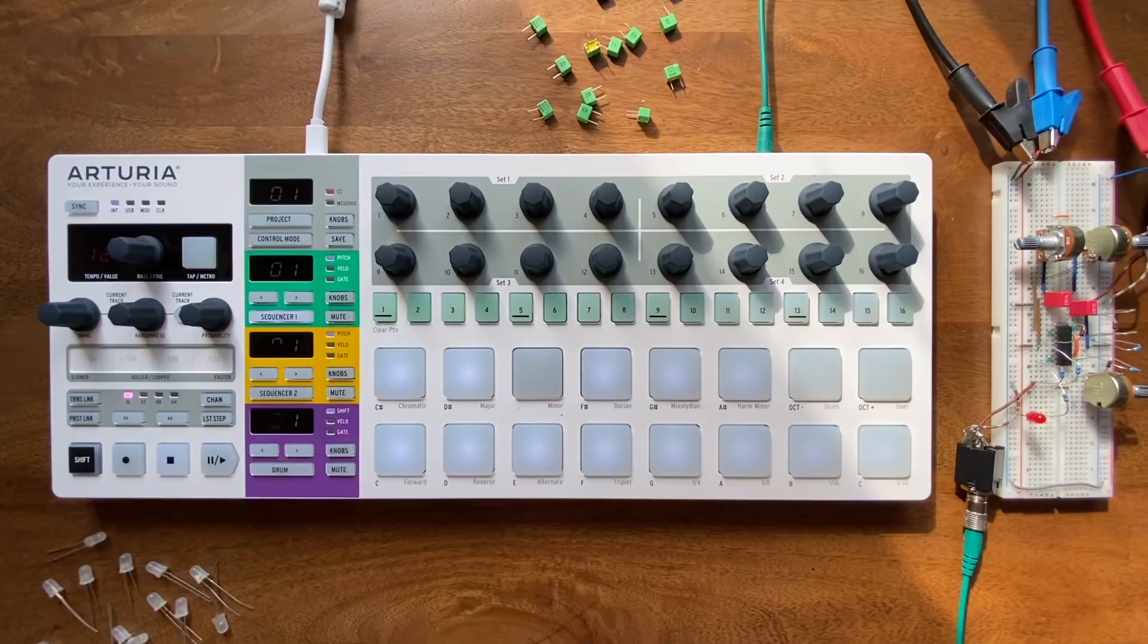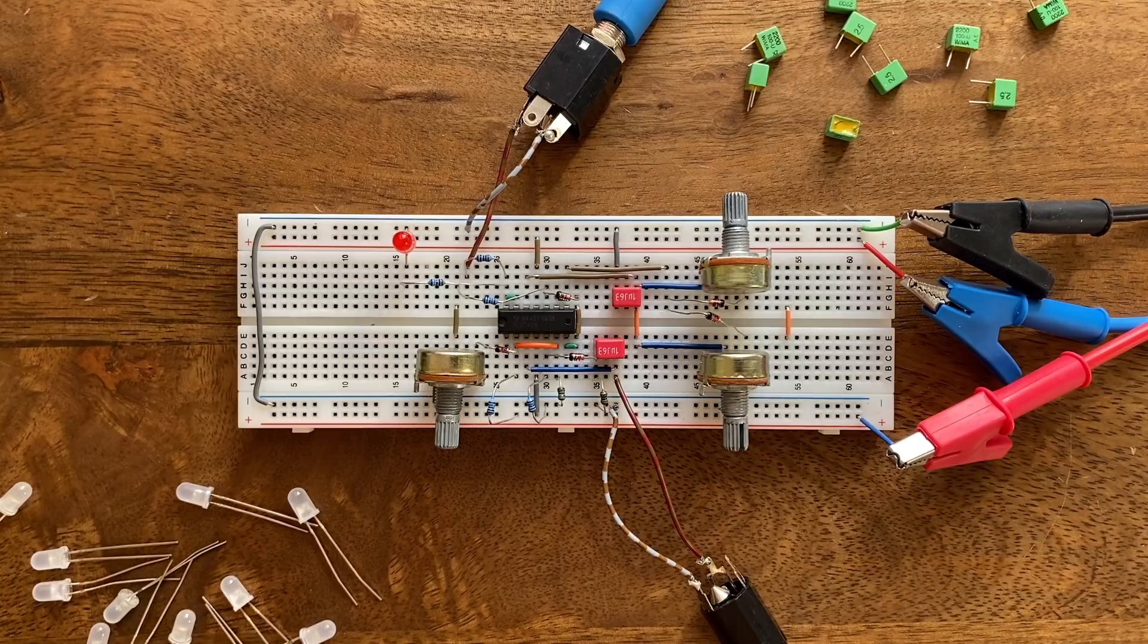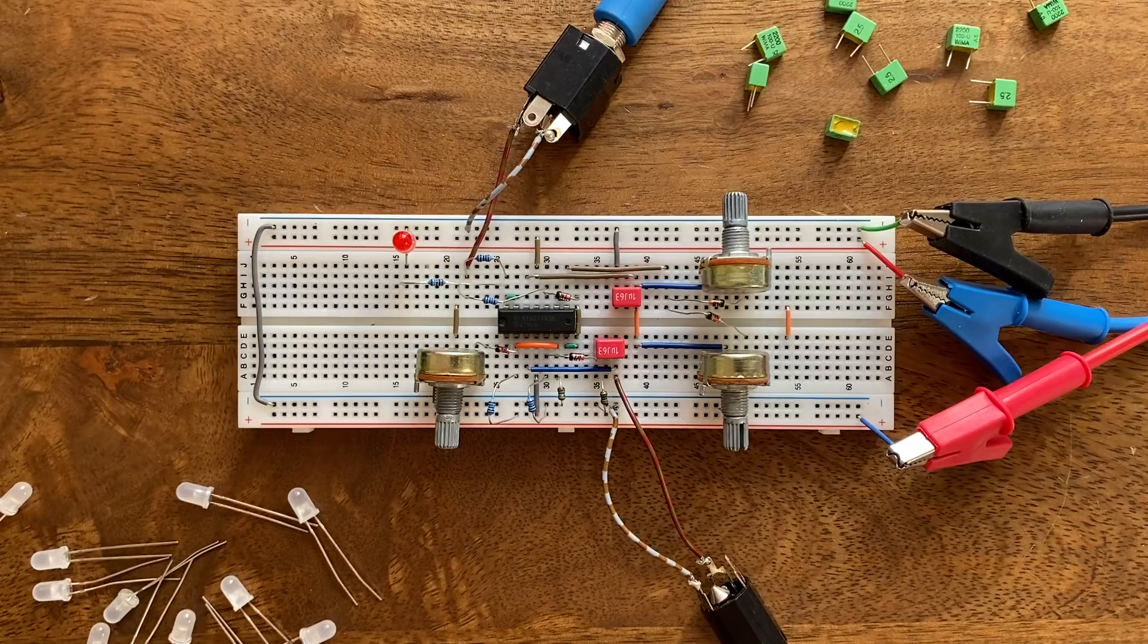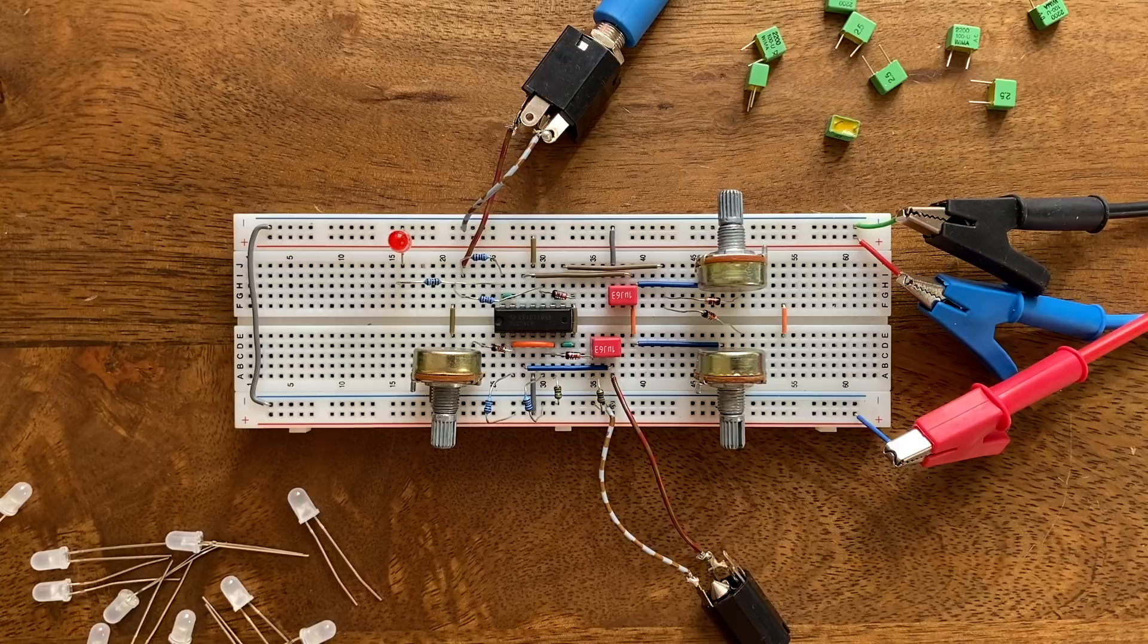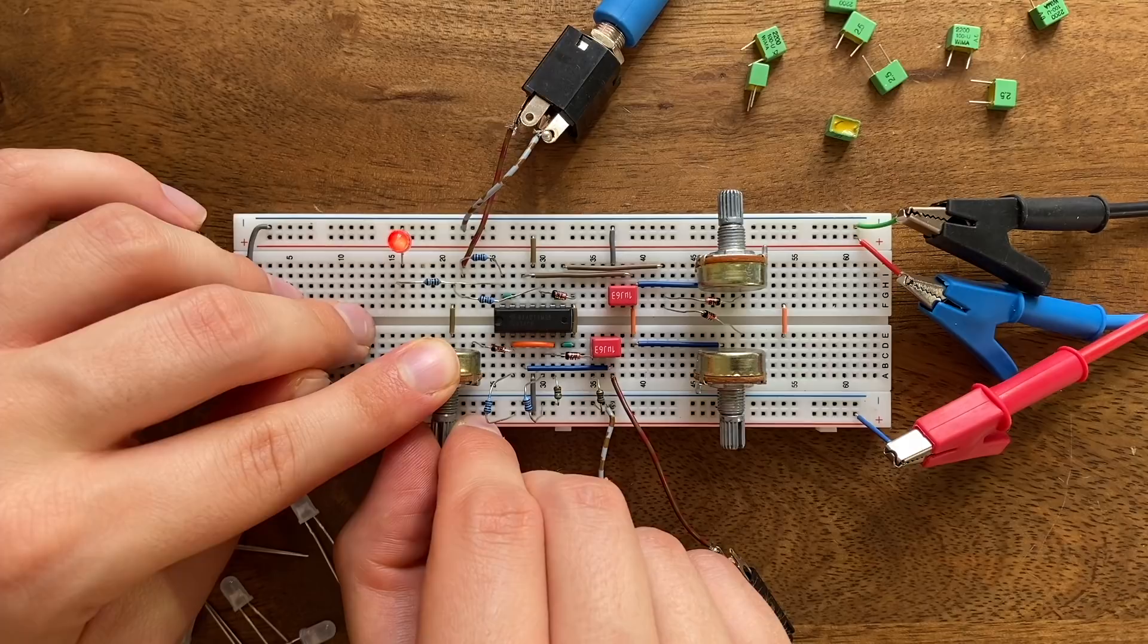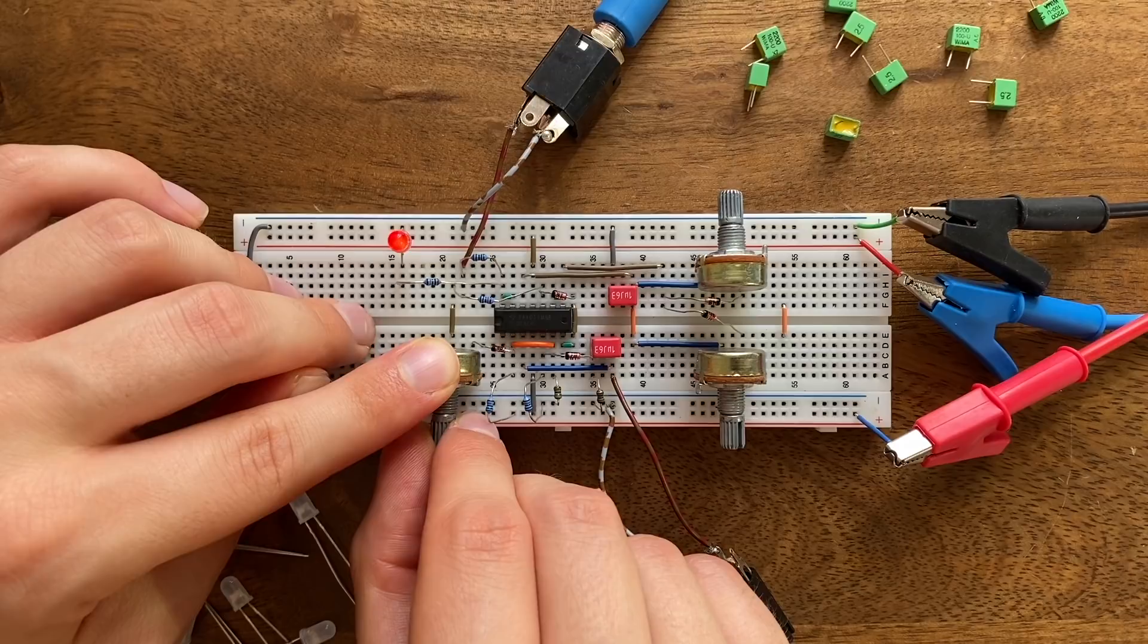As you can hear, we still get somewhat of a decay phase after the attack. But watch what happens as I slow that attack way down. As expected, we basically skip the decay phase. To wrap things up, let's try it with a proper sequence. I'm sending the filter's output into a VCA which is also controlled by our envelope, giving us a proper traditional monosynth voice in total. Here's what that sounds like.